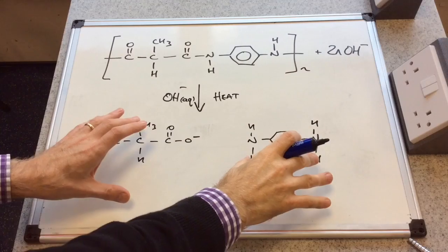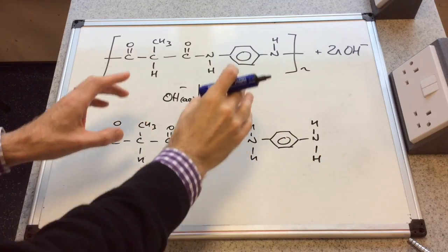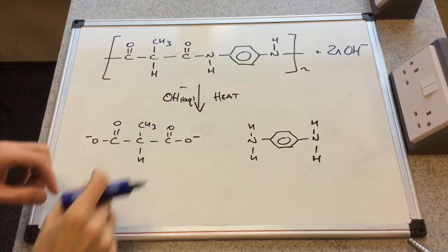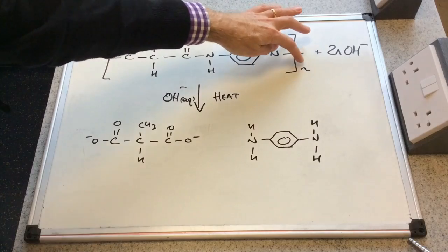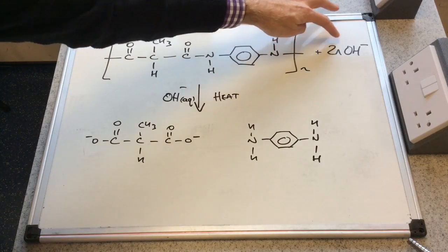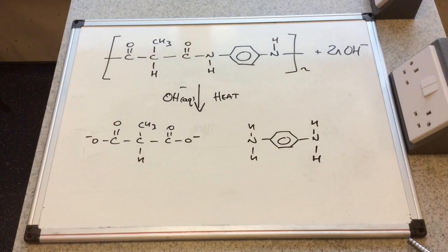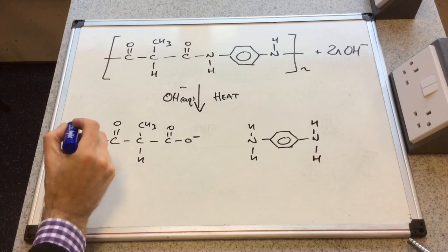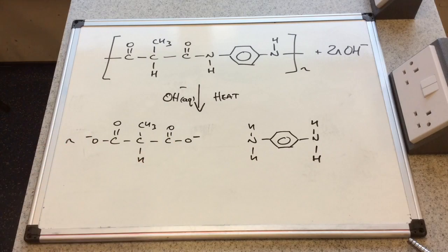remember these two hydroxide ions is what's required per repeat unit. We've got N repeat units so we're going to need two N moles of hydroxide ions and that will generate N moles of this ion here and N moles of the diamine.